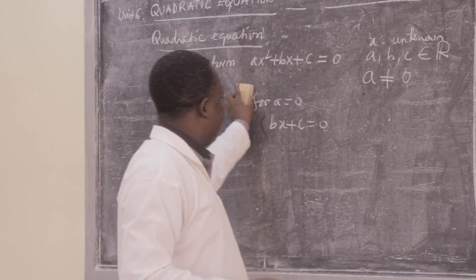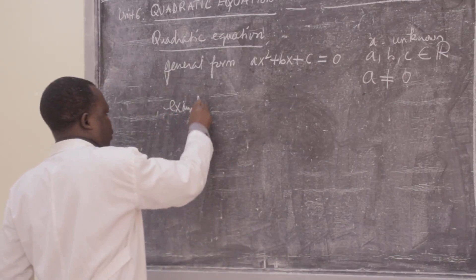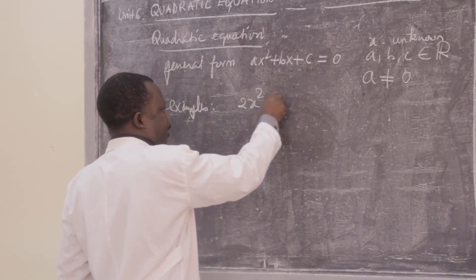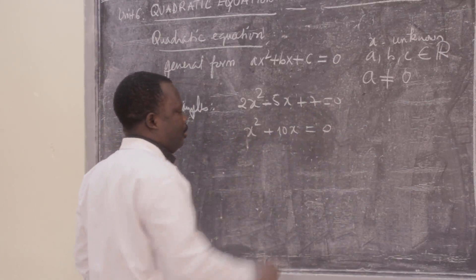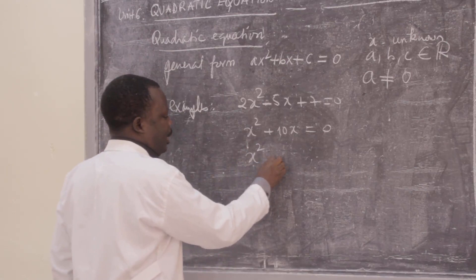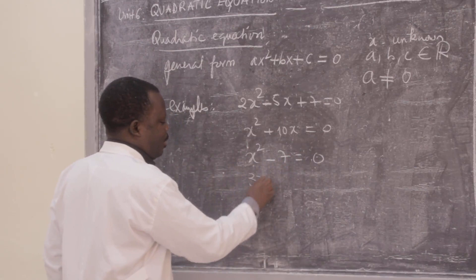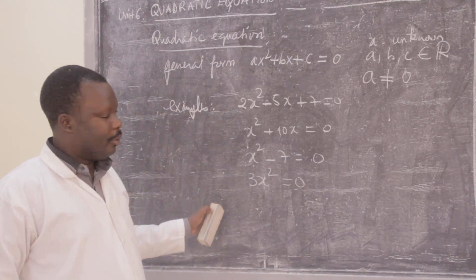For example, some examples of quadratic equations: 2x² - 5x + 7 = 0; x² + 10x = 0; x² - 7 = 0; and 3x² = 0. These are all examples of quadratic equations.